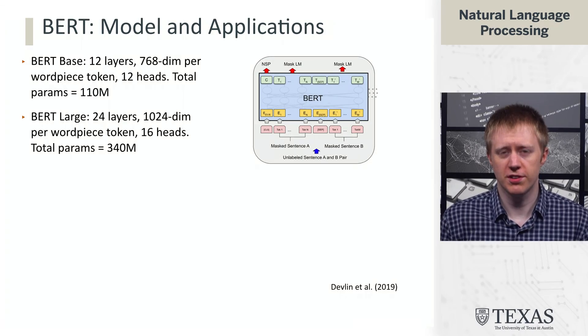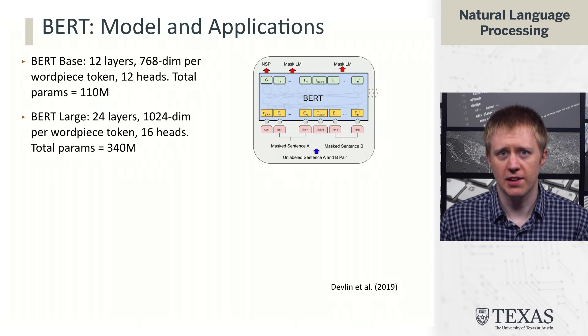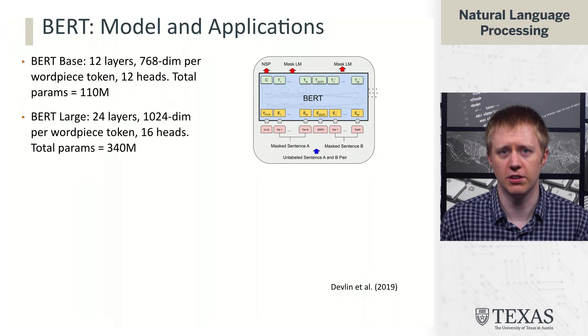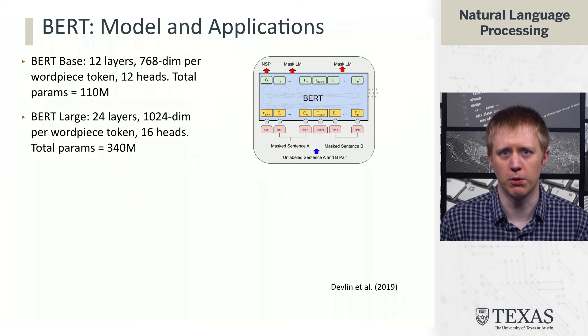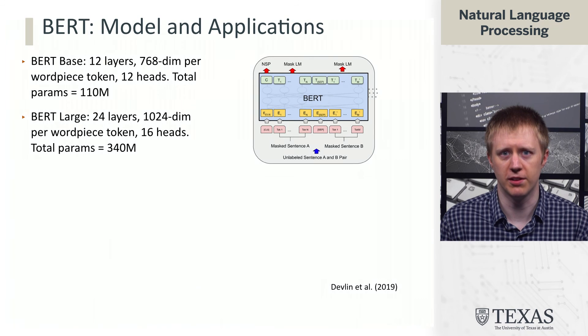In this segment we're going to talk about what the BERT model actually looks like and how it gets applied to downstream tasks. There were two versions of the BERT model presented in the original paper. Both are transformer models, following the architecture discussed before, and these are big models. BERT base has 12 layers and BERT large has 24 layers. For BERT large, there are 1000-dimensional embeddings for each word piece token, 16 attention heads at each layer, giving a total of 340 million parameters.